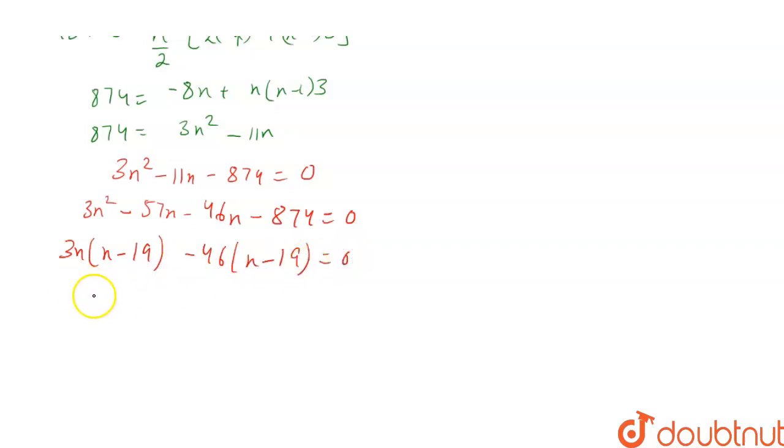So the values of n are 19 and 46/3. 46/3 will be rejected because n cannot be in fraction, so n = 19 is the correct value.